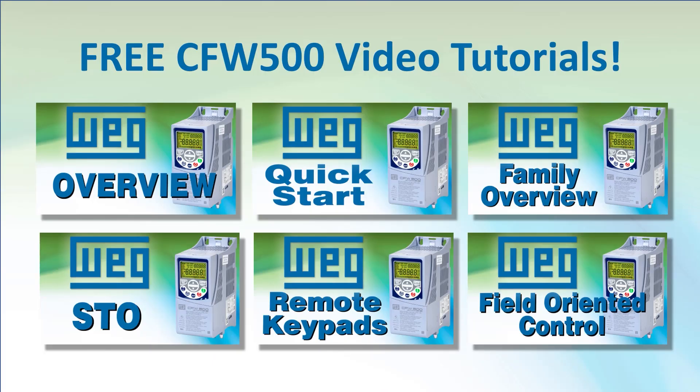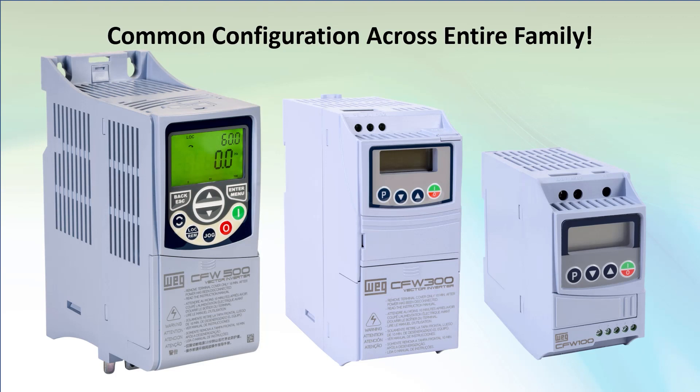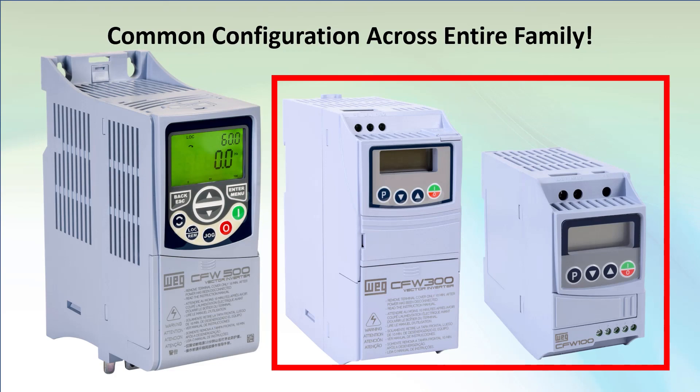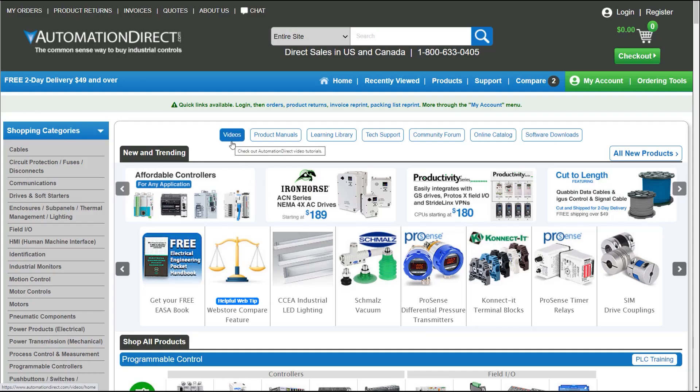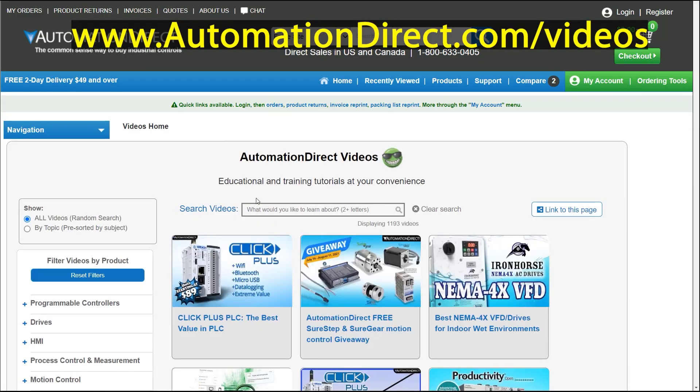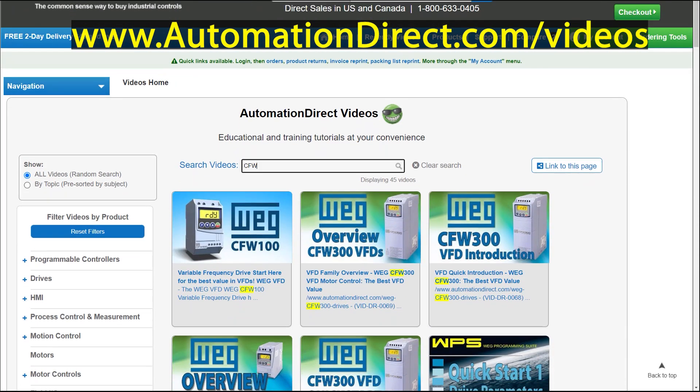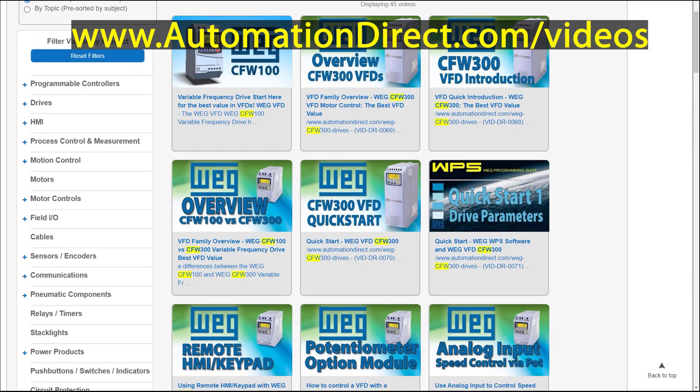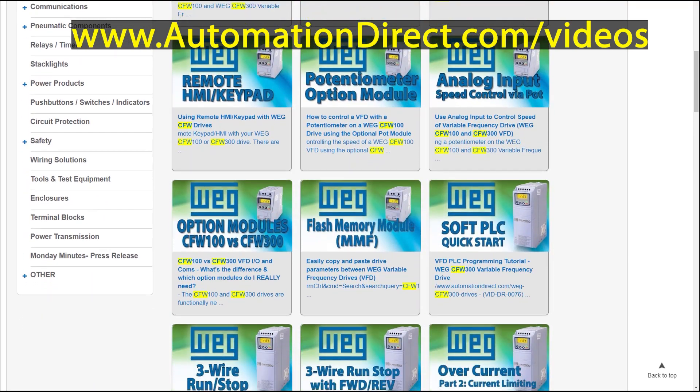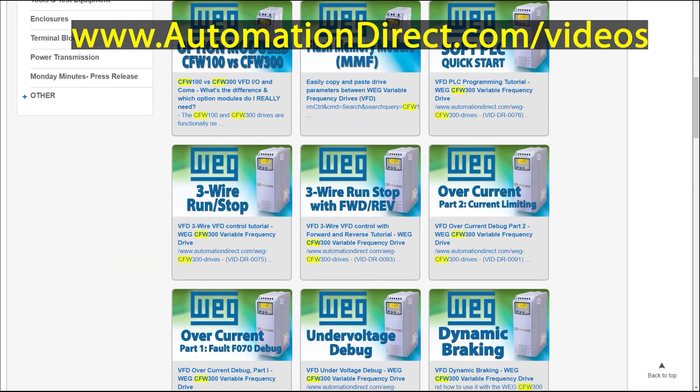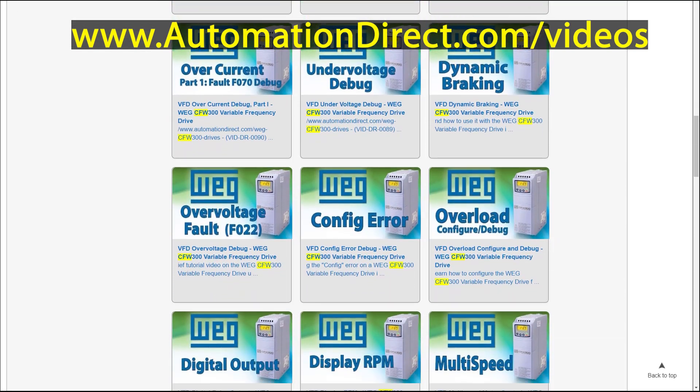Speaking of videos, you'll only see a few videos for the WEG CFW500 drive just highlighting the unique or key advanced features that make it stand out. Why? Because with the exception of those advanced features, the WEG CFW500 drive uses the exact same parameters and configuration as the WEG CFW100 and CFW300 drives. If you go to automationdirect.com/videos and search for CFW, you'll see we have tons of videos for those drives showing you things like how to get up and running quickly with the free configuration software, how to use the analog inputs and option modules, how to program the built-in PLC,